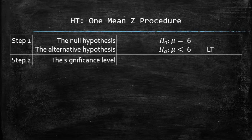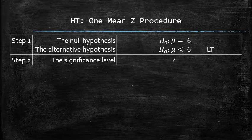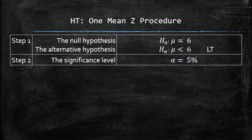The significance level can always be found in the text of the problem. In our case, it is 5%. Step 2 is complete.